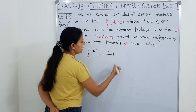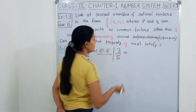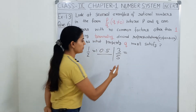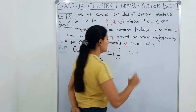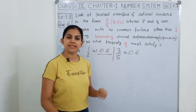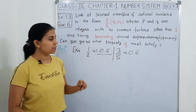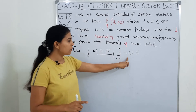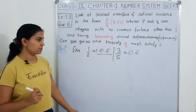आप कोई और example ले लेते हैं. मानलो हमने ले लिया 3 upon 5. अब इसको solve करोगे तो क्या आएगा? 0.6 — और ये भी ऐसा ही example हो गया. कि कोई भी common factor नहीं है 1 के इलावा, और terminating decimal expansion है.